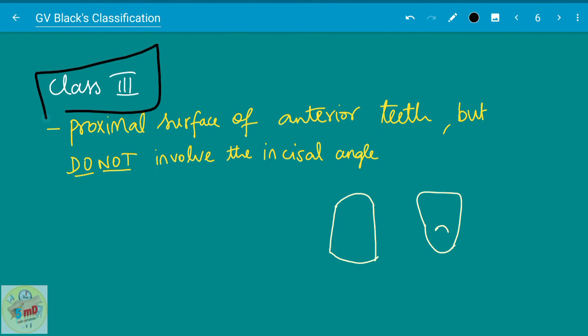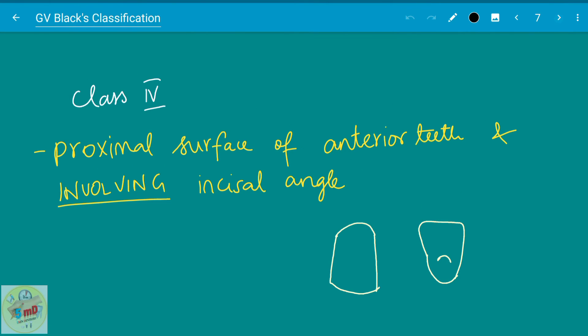Moving on to the class three: proximal surfaces of the anterior teeth, but that does not involve the incisal angle. So this is the incisal angle, this part is the incisal angle, it is not involved. Only the proximal surfaces are involved. So dental caries of the proximal surfaces of the anterior teeth are called as class three of GV Black's classification. When the proximal surface of the anterior teeth involves the incisal angle, like this, so it is a class four caries.